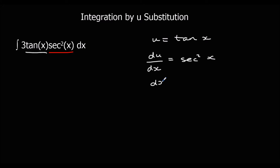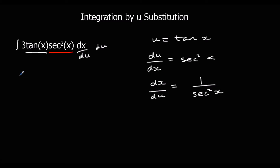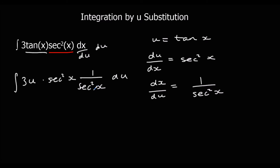We'll flip it over: dx/du is 1 over sec squared x. So we're going to integrate with respect to u instead of x. We've got 3 times u, times sec squared x, times 1 over sec squared x, with respect to u. The sec squared x terms all cancel, which gives us the integral of 3u with respect to u.